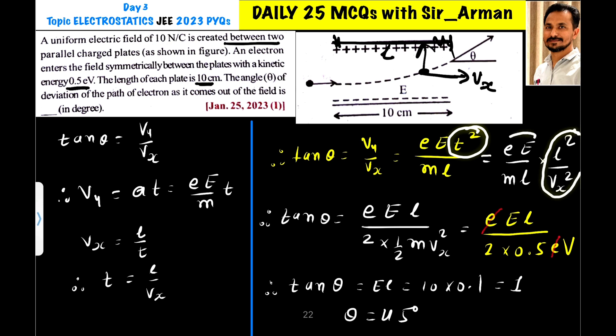Now this term eE by ml, so here eE by m. Now see what will happen here. Here l and l will get cancelled. So here it is eE and here l. And then what I have done is I have multiplied this by 2 and divided by 2, because the kinetic energy is given.